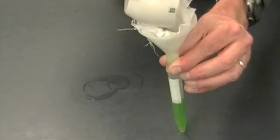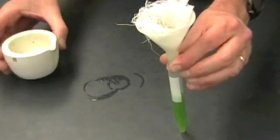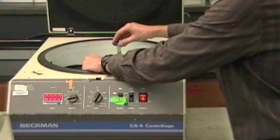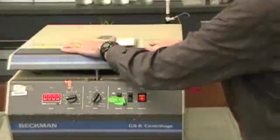You're going to filter those leaves to get big chunks out, and then finally you're going to spin them in a centrifuge.